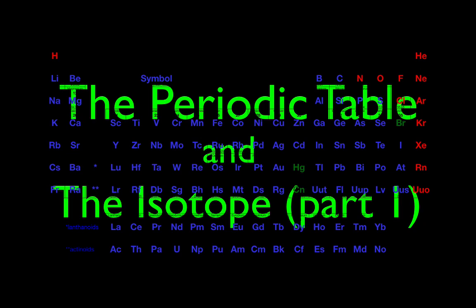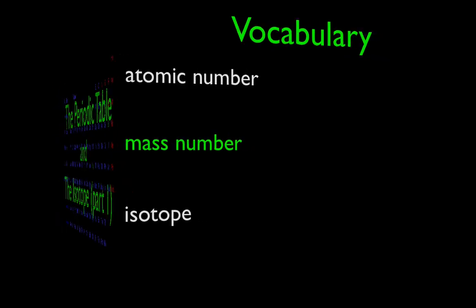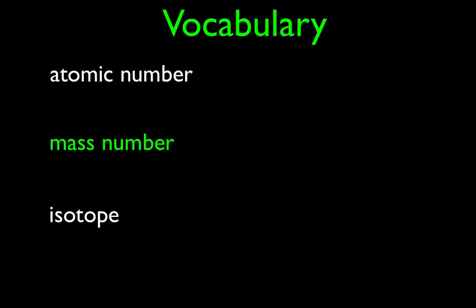In today's video, I am going to go over the periodic table and the isotope, part one. In this video, we're going to talk about what isotopes are and how we can use the periodic table to write the isotope symbols. In part two, we will talk about how to solve some simple problems concerning isotopes.